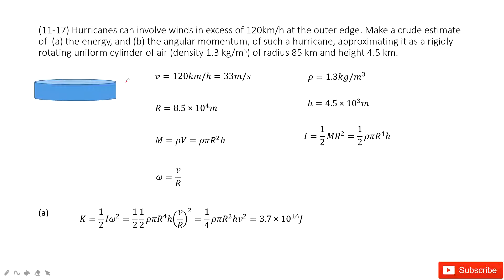Chapter 11 is about angular momentum. For the hurricanes, we can consider it as a cylinder of air.